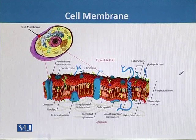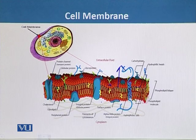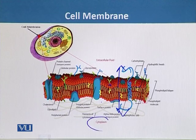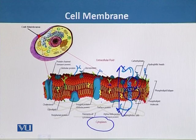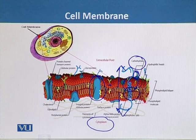The cell membrane, also called the plasma membrane, has a chief function to regulate and control transport in and out of the cell. It forms a boundary between the outside and inside of the cell, where the inside is the cytoplasm. We can see a double layer of lipids called the lipid bilayer, as well as proteins embedded in the membrane and carbohydrates attached to those proteins.